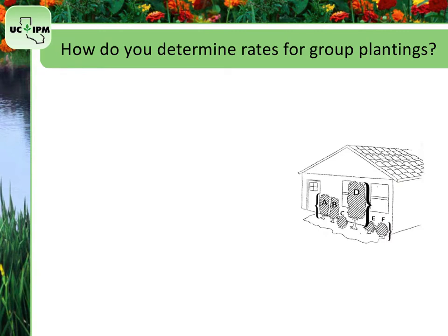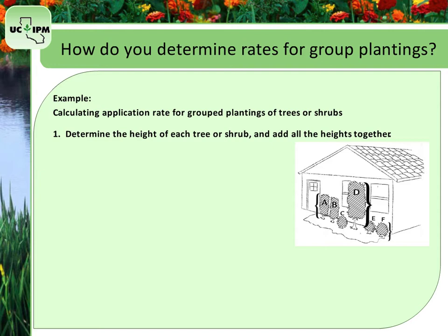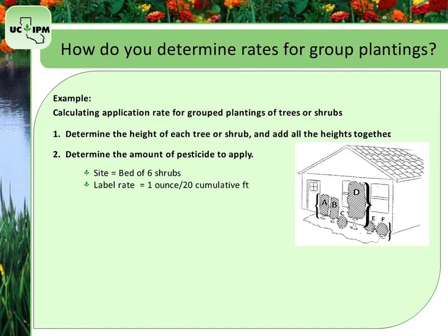For grouped plantings of trees or shrubs, calculate the application rate based on the cumulative feet of height. Determine the height of each tree or shrub, then add all the heights together. For example, if you are applying insecticide to a bed of 6 shrubs as a soil drench and the labeled rate is 1 ounce of product per 20 cumulative feet of height, and you have a total of 30 cumulative feet, divide your height by the rate: 30 feet divided by 20 feet per ounce equals 1.5 ounces of insecticide.